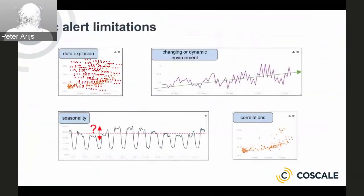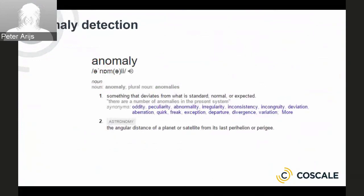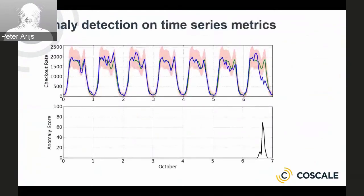There are other limitations too: dynamic environments require you to constantly reset or reconfigure alerts, seasonality is hard to handle with static alerts requiring complex time-based alert expressions, and the same goes for correlations between metrics. The definition of an anomaly is basically a deviation from what is normal or expected — so if we can get good at predicting expected behavior, we can also get good at detecting anomalies. CoScale looks at historic behavior of all monitored metrics, makes a prediction incorporating domain knowledge, and if we see a deviation, we assign an anomaly score depending on how large the deviation is, then alert when this score exceeds a threshold.